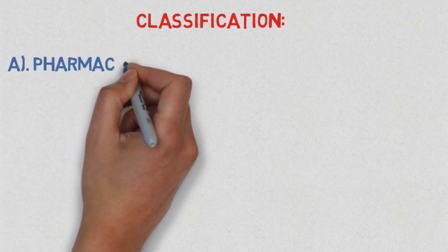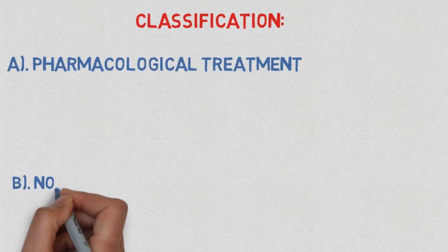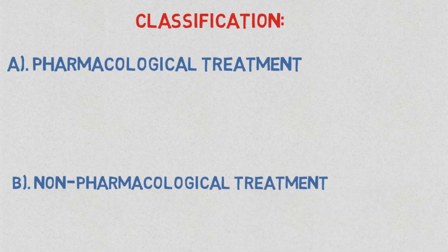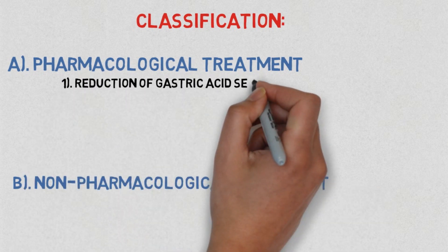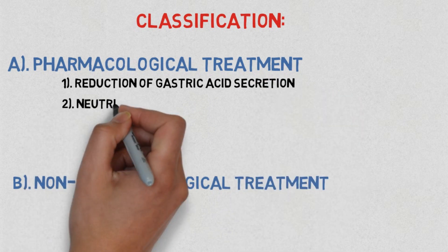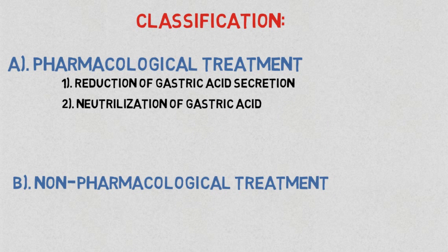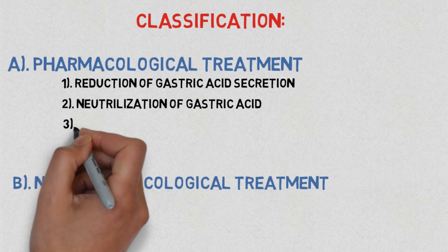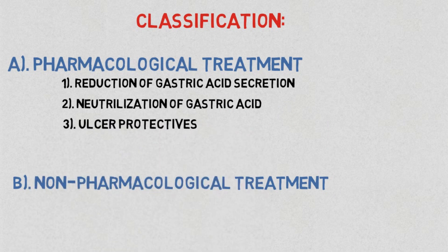So, classification of peptic ulcer drugs. There are mainly two types: pharmacological treatment and non-pharmacological treatment. First let's discuss about pharmacological treatment. The drugs are mainly classified into: number one, reduction of gastric acid secretion; number two, neutralization of gastric acid; number three, ulcer protectives; and number four, anti-H. pylori drugs.